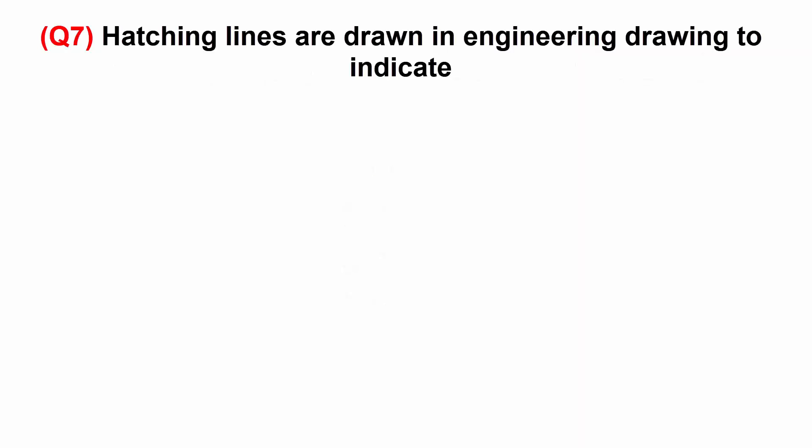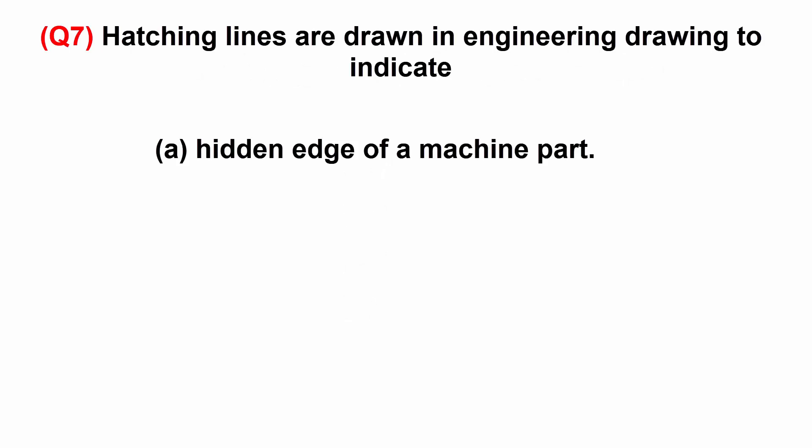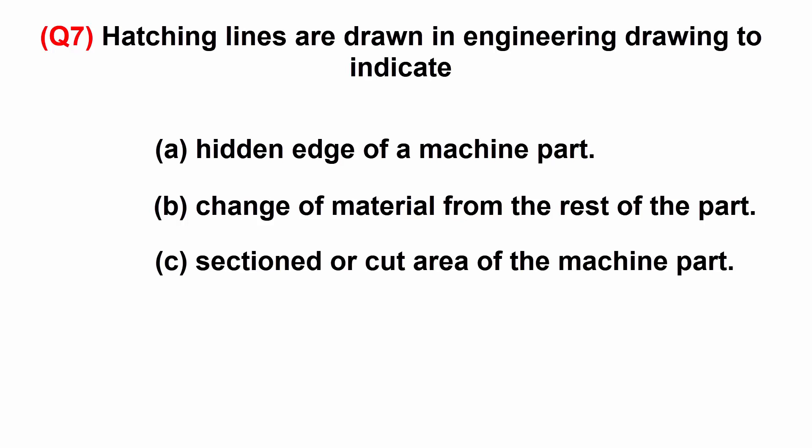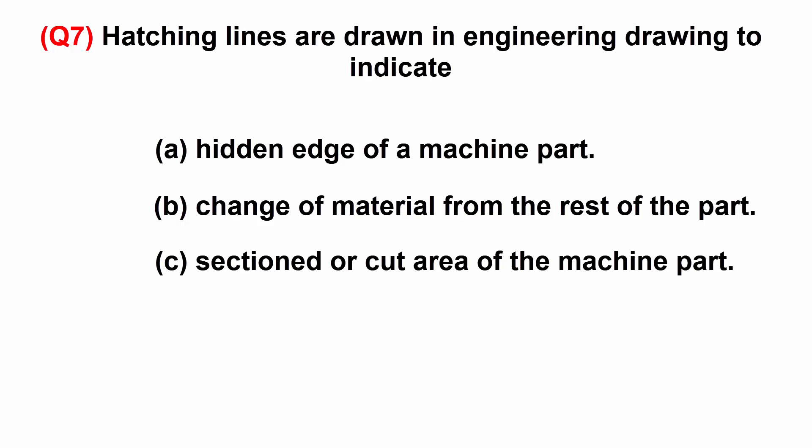Hatching lines are drawn in engineering drawing to indicate: A: hidden edge of a machine part. B: change of material from the rest of the part. C: sectioned or cut area of the machine part. Or D: three-dimensional feature of the part.